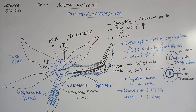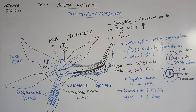Mesoderm की जो Layer है वो Completely Present होती है. Pseudo-Coelomate में False Coelom होती है, जिसमें Mesodermal Layer Present तो होती है लेकिन वो Layer Patches में Present होती है, एक Complete Layer का Formation उनमें नहीं होता है. लेकिन Coelomate में, जैसे कि आप Diagram में देख सकते हो, Complete Mesodermal Layer Present है, और ये हम Adults की बात कर रहे हैं.